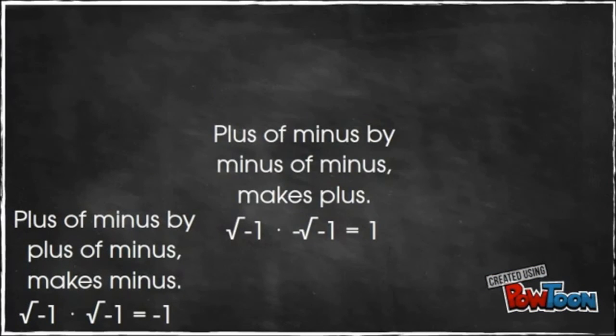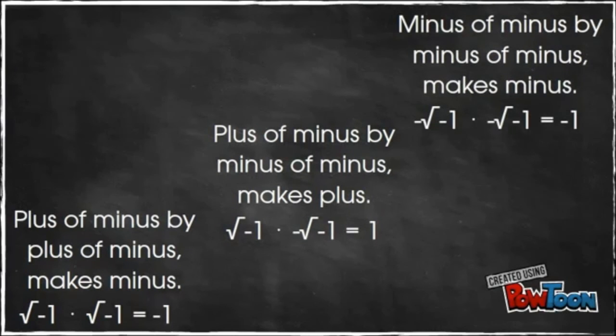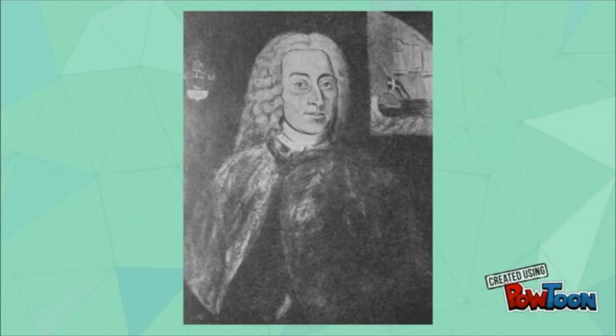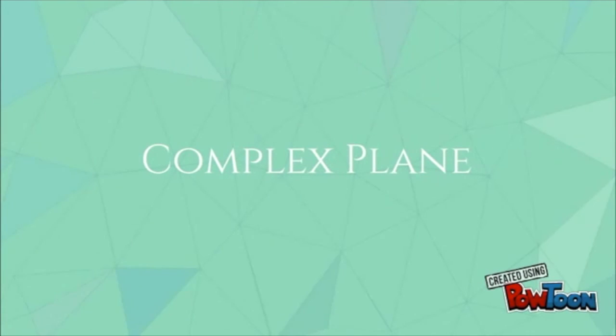He referred to square root negative 1 as plus of minus and negative square root negative 1 as minus of minus. Further down the line, Casper Wessel developed a new plane known as the complex plane on which complex numbers could be graphed.